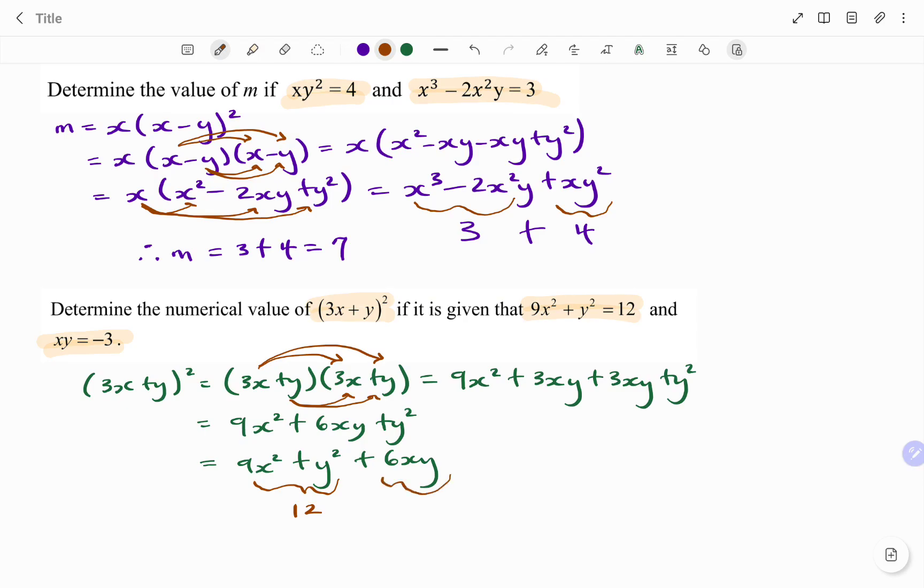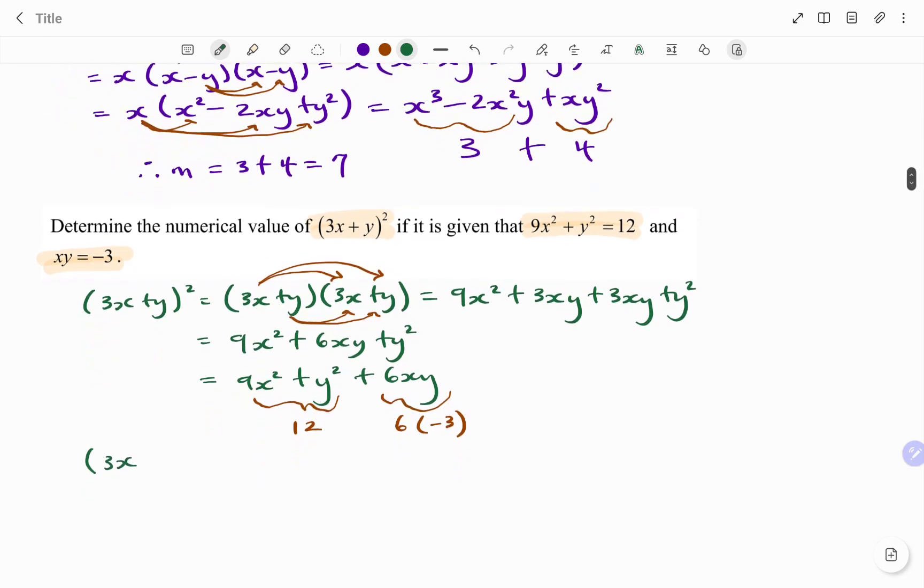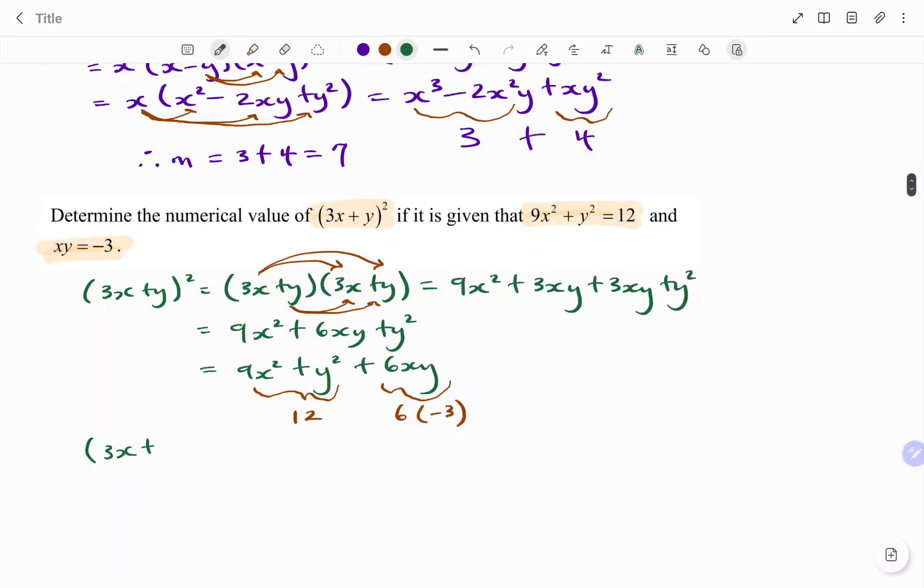And then I have xy to be negative 3. So therefore, 6xy will be 6 multiplying negative 3. And if I resolve that, my 3x plus y all squared will be equal to, the function is plus. So I have 12 plus 6 times negative 3, that's going to be negative 18. And 12 plus negative 18 is the same as 12 minus 18.